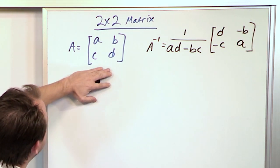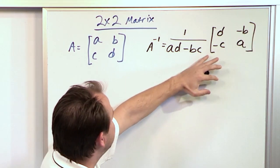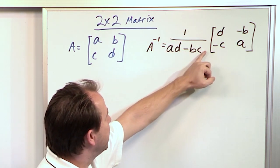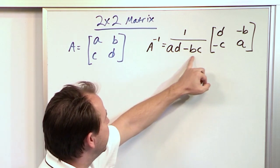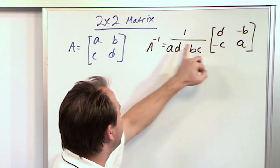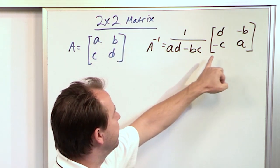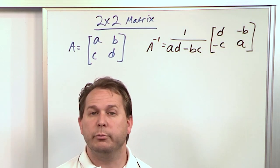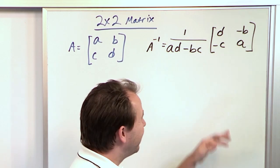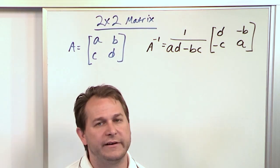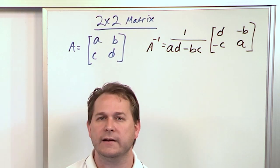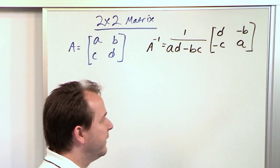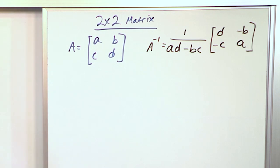So this is the matrix you start with, and this is how you calculate its inverse. What you have out in front is a scalar, and then the matrix is just a rearrangement of the original elements with some negative signs — D and A switch positions, while B and C get negatives. You multiply it all out and you get what we call the inverse of the matrix. This shortcut is only valid for 2x2 matrices. In the next lesson I'll teach you how to take inverses of larger matrices using a more general technique.